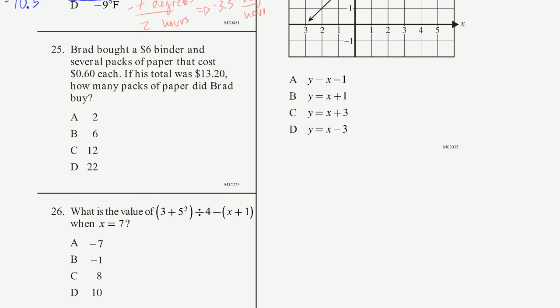Problem 25. Brad bought a $6 binder and several packs of paper that cost $0.60 each. If his total was $13.20, how many packs of paper did Brad buy? All right, well, let's say he bought p packs of paper. So how much did he spend? He bought a $6 binder, so he spent $6 plus $0.60 per pack times the number of packs he bought, right?